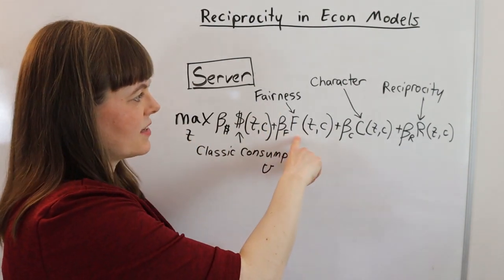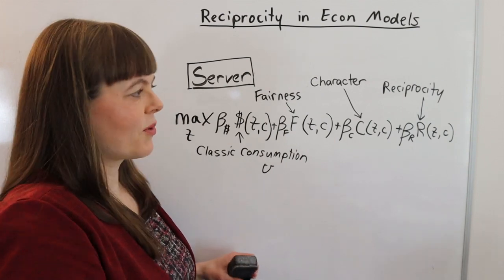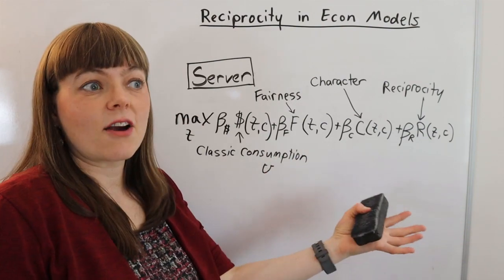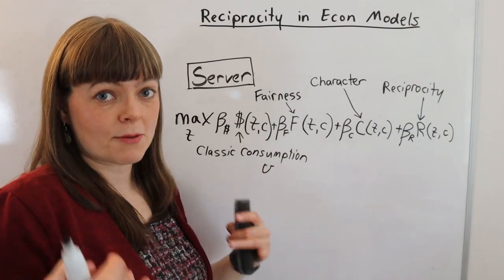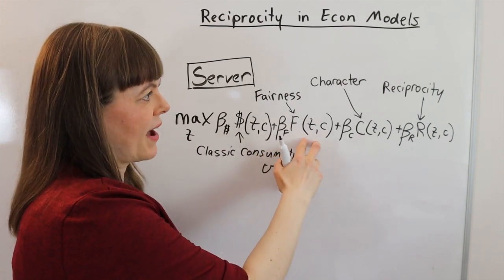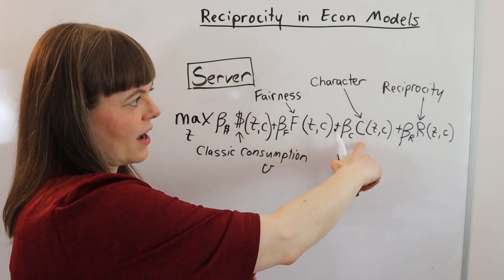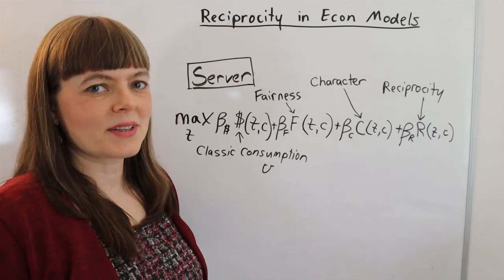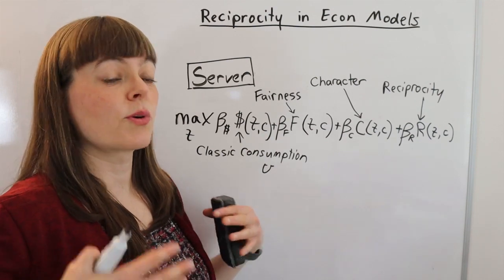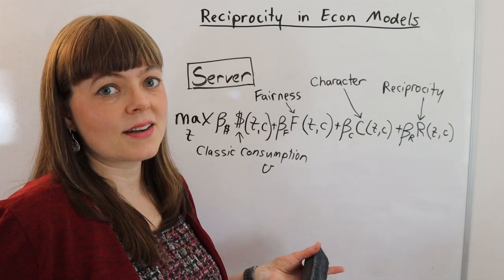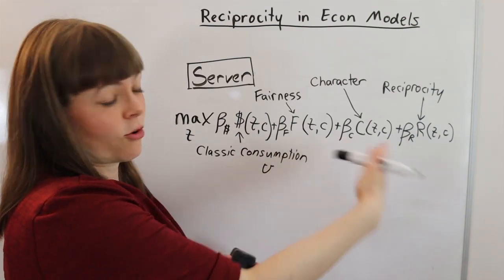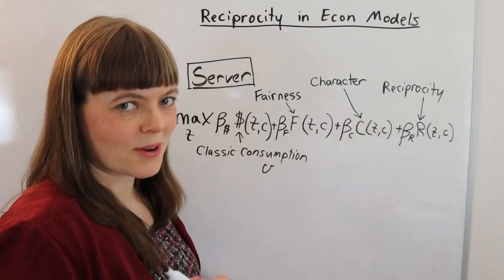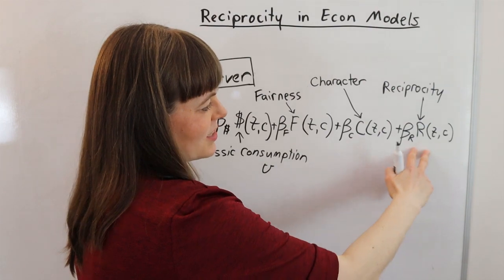The second one is his fairness toward her. And we all know people who are super sensitive to am I being treated well enough and are other people being fair to me and they get really upset when this term is bad. And then the next one is her niceness to him or her character, because some people like to think of themselves as people who are generous, regardless of the meanness of others. And that's a character trait. Of course, for some people, the importance weight on this one might be zero. And then we have the classic reciprocity term out here.